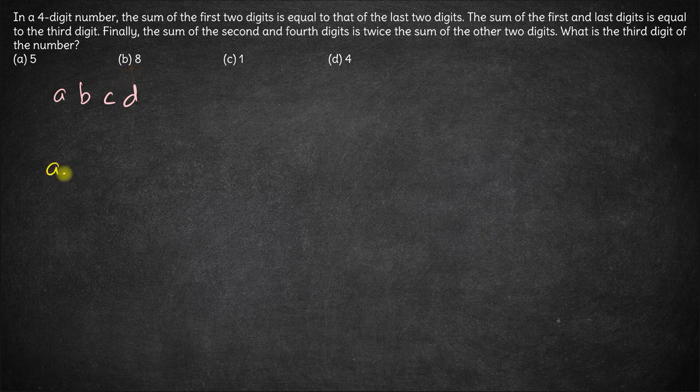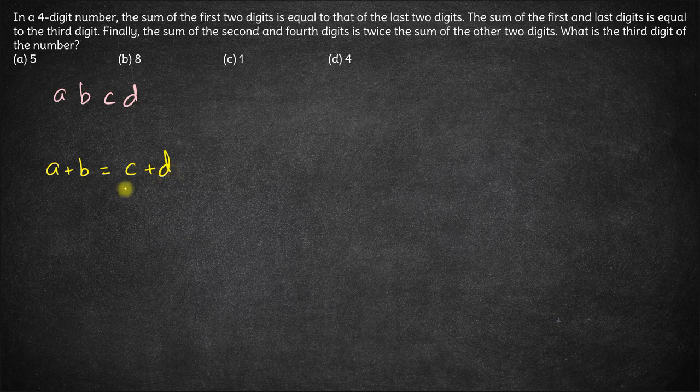Now the question says sum of the first two digits A plus B is equal to sum of the last two digits C plus D. So let's say this is the first equation.